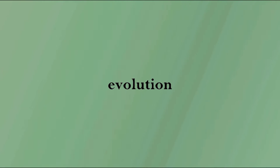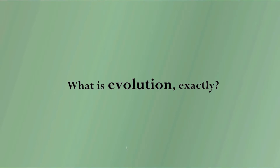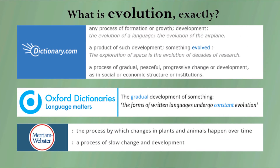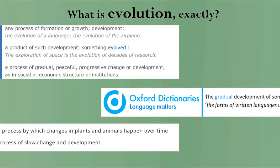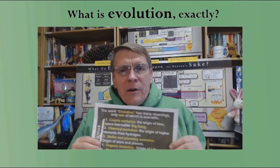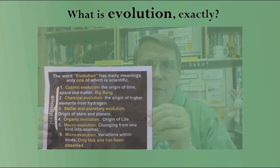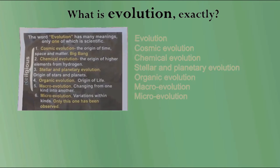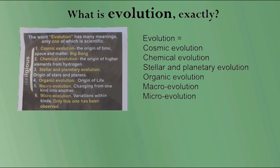Before we go anywhere with this, we've got to first clearly define and establish exactly what it is we're talking about. In everyday language, when we use the word evolution, it generally means a gradual change over time or improvement, something along those lines. This is the prime reason why different notions of evolution commonly get conflated. As an example, take Kent Hovind's Six Definitions of Evolution. Conflation means to refer to multiple separate concepts as if there were one single concept.